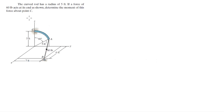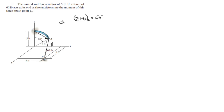For more videos visit forsakeofducation.com. This problem says the curved rod has a radius of 5 feet. If a force of 60 pounds acts at the end as shown, find the moment that this force creates about C. To solve this, we need to find vector CA, the Cartesian vector form of F, and the moment is given by vector CA cross F.